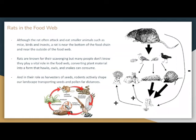Rats in the food web. Although rats often attack and eat smaller animals such as mice, birds, and insects, a rat is near the bottom of the food chain. Rats are known for scavenging, but they actually play a vital role in the food web — they convert plant material into forms that hawks, owls, and snakes can consume. Their roles as harvesters of seeds means rodents actively shape our landscape, transporting seeds and pollen over distances.